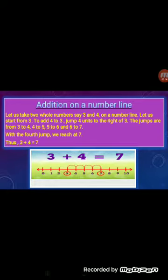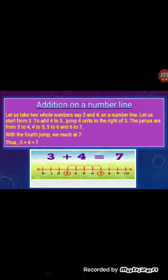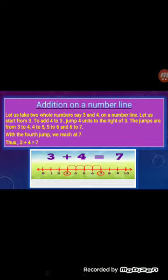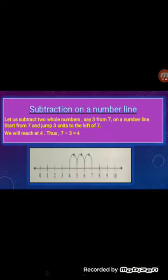Now we will study how to add two whole numbers on a number line. Let us take two whole numbers, say 3 and 4. Start from 3; to add 4 to 3, jump 4 units to the right of 3. The jumps are from 3 to 4, 4 to 5, 5 to 6, and 6 to 7. With the 4th jump we reach 7, so 3 plus 4 is equal to 7.